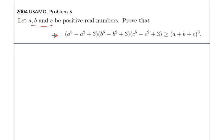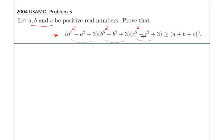This is a problem about algebraic inequalities. What really makes us uncomfortable is these fifth powers on the left hand side. We would really like to reduce the power of these three polynomials to something manageable — on the order of two or three instead of five. For that, we make the following observation that we feel will do the trick.